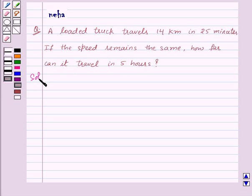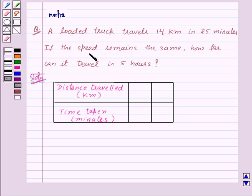First of all, let us make a table to represent distance traveled in kilometers and time taken in minutes. In the question, it is given that the truck travels 14 kilometers in 25 minutes, so the distance traveled is 14 kilometers and the time taken is 25 minutes.